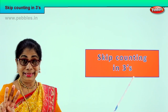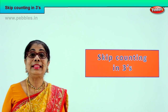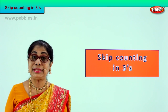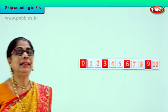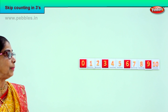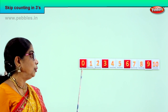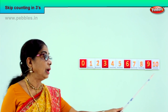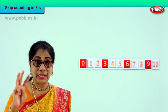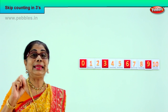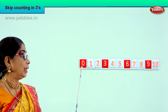Alright, let's look at from 0 to 10. First, do the skip counting. Look, you have 0 up to 10 and we are going to skip count in threes.